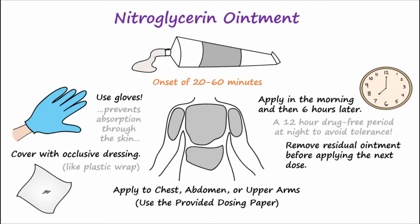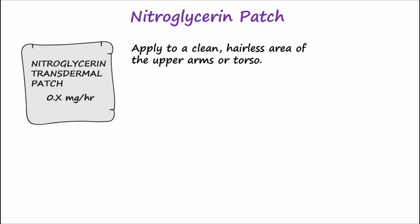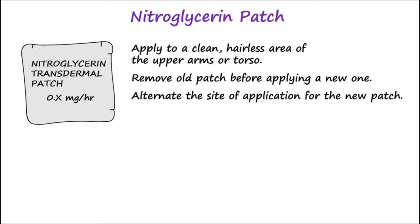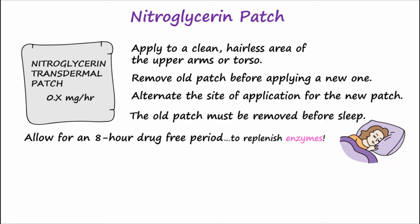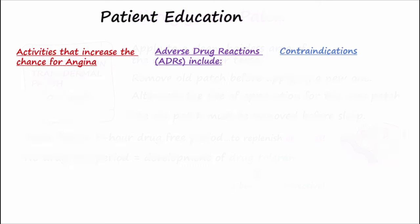Remember to remove residual ointment from the previous dose before applying the next dose. This can be done by gently cleaning with soap and water and then patting dry. The patches should be applied to a clean, hairless area of the upper arms or torso. Remember to make sure the old patch is removed before applying a new one, and to alternate the sites of application. The old patch should be removed before sleep to provide an eight-hour drug-free period. This allows enzymes to replenish; if a drug-free period is not provided, the patient will develop tolerance to the nitroglycerin and the medication will not be effective for treating or preventing chest pain.